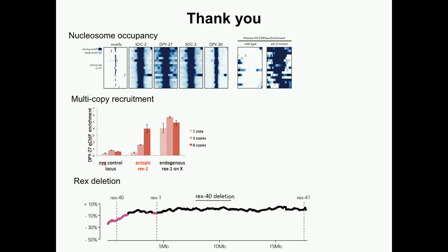Question: When you did the ectopic insertion on the autosome, did you look at different sites? Because there are sites that resemble REX sites on autosomes — it could be very context-dependent whether it works or not. Response: We did try a few different places. We are still doing experiments to see how much recruitment there is, but I'm not aware of places on autosomes that may act like recruitment sites. We have looked very hard to see if there is any property of these motifs on the autosomes that might help them be more amenable to recruitment, and we can't find it.